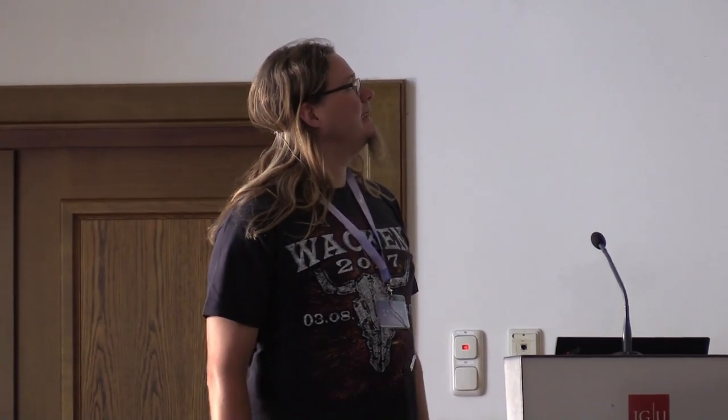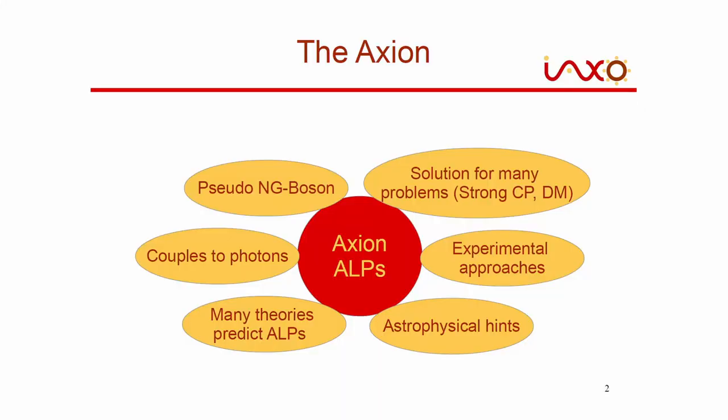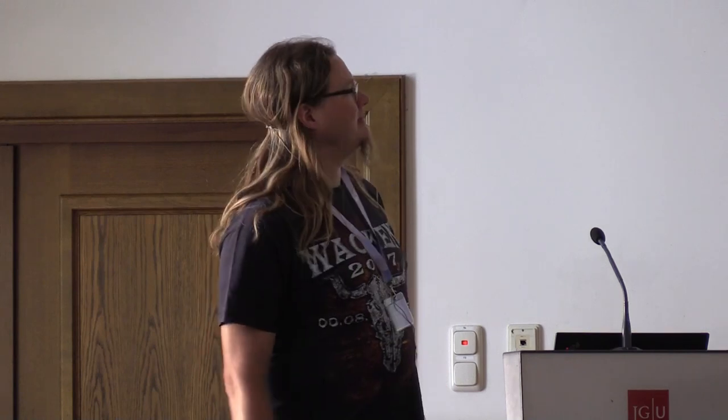I'm talking on the status of Baby IAXO. To start, I want to introduce the axion very quickly, but since Marius has mainly said everything already, I'll quickly go through it after the coffee break. It's a pseudo-Nambu-Goldstone boson and a solution for many problems in physics - for example, the strong CP problem - and it could also be a solution for dark matter. There are a lot of experimental approaches, astrophysical hints, and it drops out of many theories. It couples to photons, which we use for the helioscope approach.